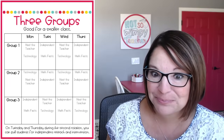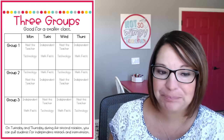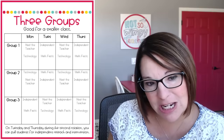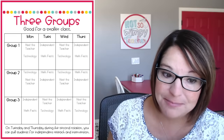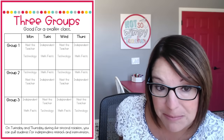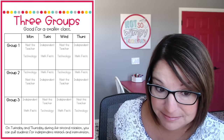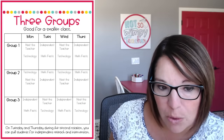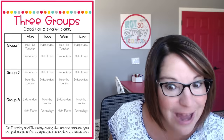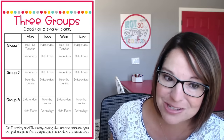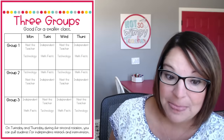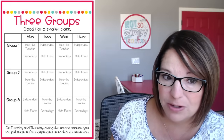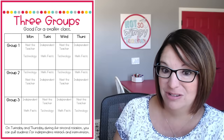This three-group schedule looks a lot like the four-group version. Groups one and two meet with the teacher and have technology on Mondays and Wednesdays, then on Tuesdays and Thursdays they have independent and math facts. Group three meets with the teacher on Tuesdays and Thursdays and then has technology. On Tuesday and Thursday, during the second rotation, every group is at one of their centers — either math facts, independent, or technology — meaning no group is coming to meet with you. This means you could pull your low group and help them through their independent center.